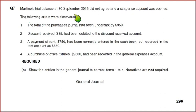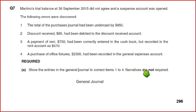The following errors were then discovered — there are basically four types of errors. Show the entries in the general journal to correct items one to four. Narratives are not required. Narratives are basically explanations of the general entries. In CAI, the examiner does not ask for narratives, especially when correcting errors, but in IGCSE the board examiner also asks for narratives for general entries to correct errors. We just need to write the narrative — for example, 'to correct the error of omission' or 'to correct the error of principle.'